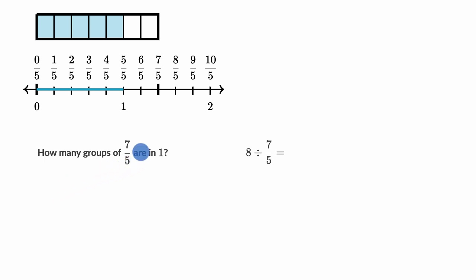All right, so let's look at seven-fifths. Seven-fifths is everything from here all the way to there, and then one is this. So how many seven-fifths are in one? Well, you can see that one, which is the same thing as five-fifths, is less than seven-fifths.